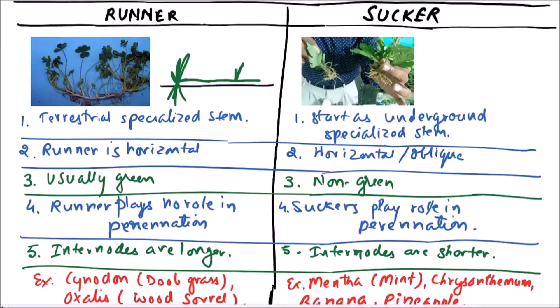In case of suckers, the plant is like this with roots below, and the lowest node will give rise to the sucker which grows horizontally or oblique, and then it will come out.